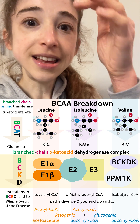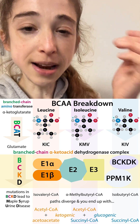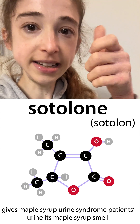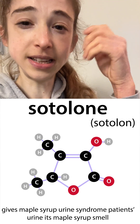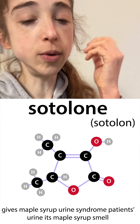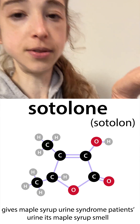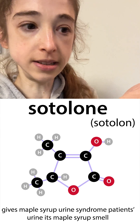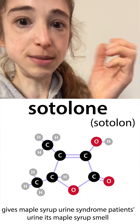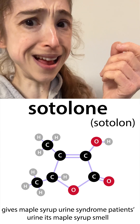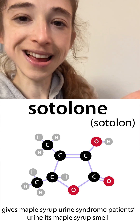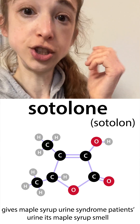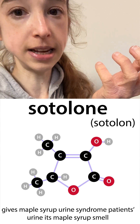Additionally, you get these side products building up. One of the spontaneous side products is sodalone, which smells like maple syrup. So parents might notice and wonder why the diaper smells like syrup — it smells good, but it's indicating you have this buildup of these branched chain amino acids.